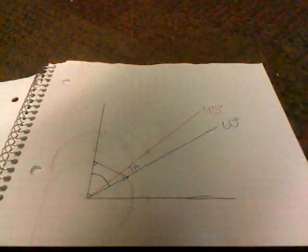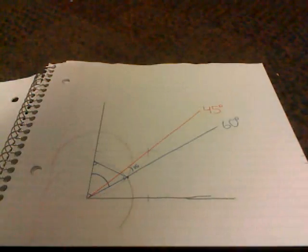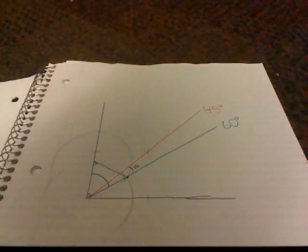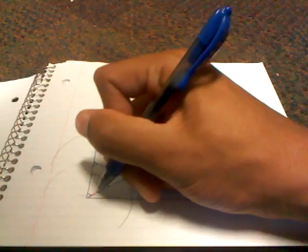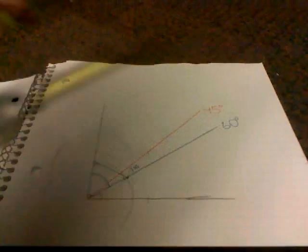And on this side and on this side is 30 degrees. All right, so now we're going to take this 30-degree angle, this one right here, and then we're going to bisect that one.